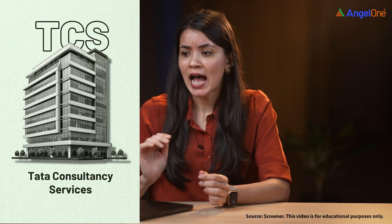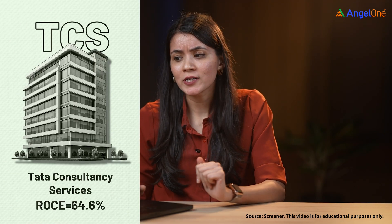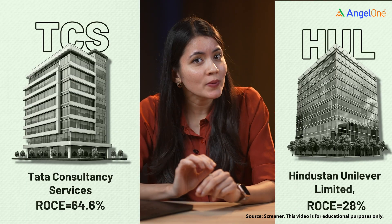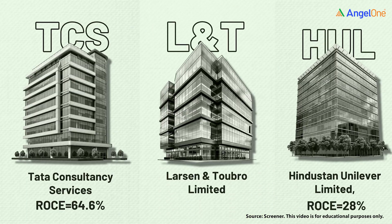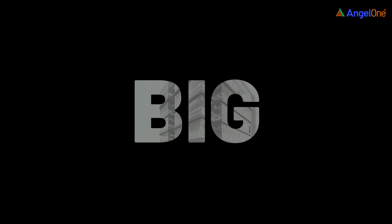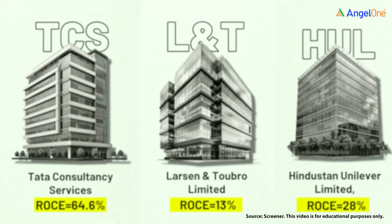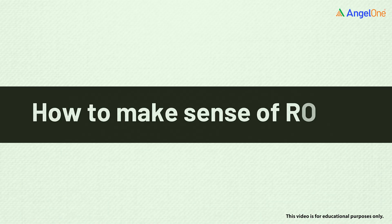Let's look at these three companies: TCS with an ROCE of around 64.6%, HUL with ROCE around 28%, and L&T around 13 to 14%. They are all big and profitable companies but they operate in very different manners, and their ROCEs reflect that. So as an investor, how do you make sense of ROCE and most importantly, how do you interpret it to make better investment decisions?